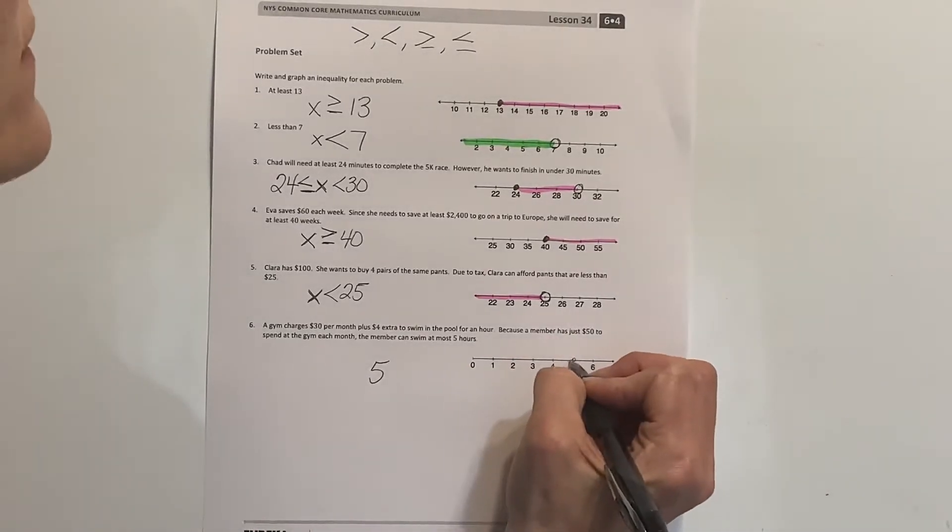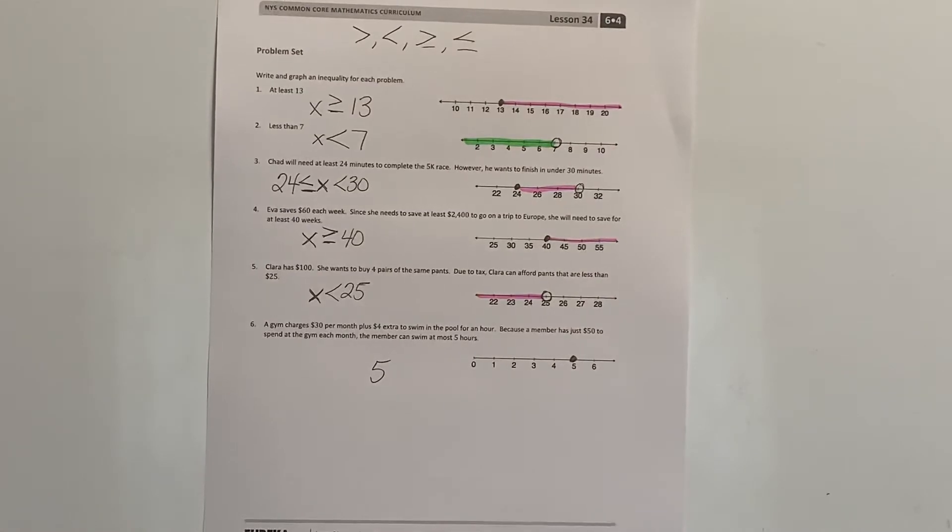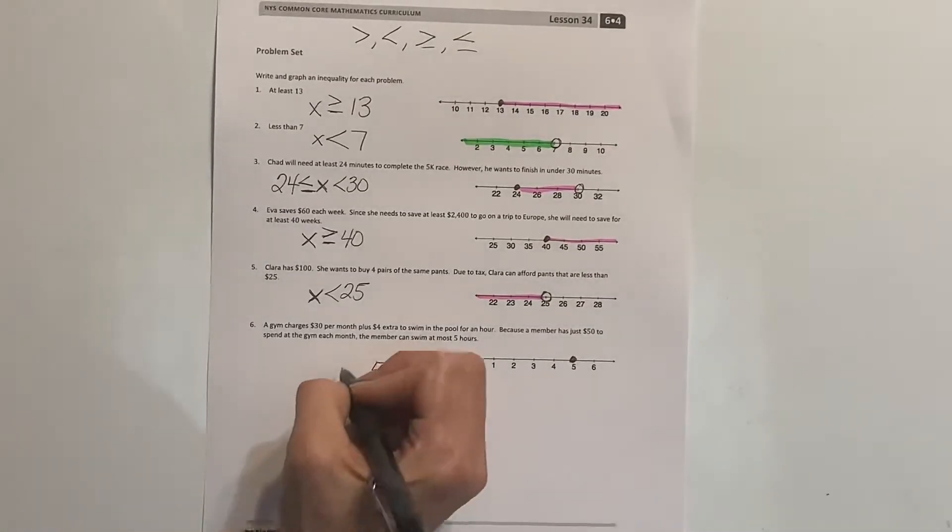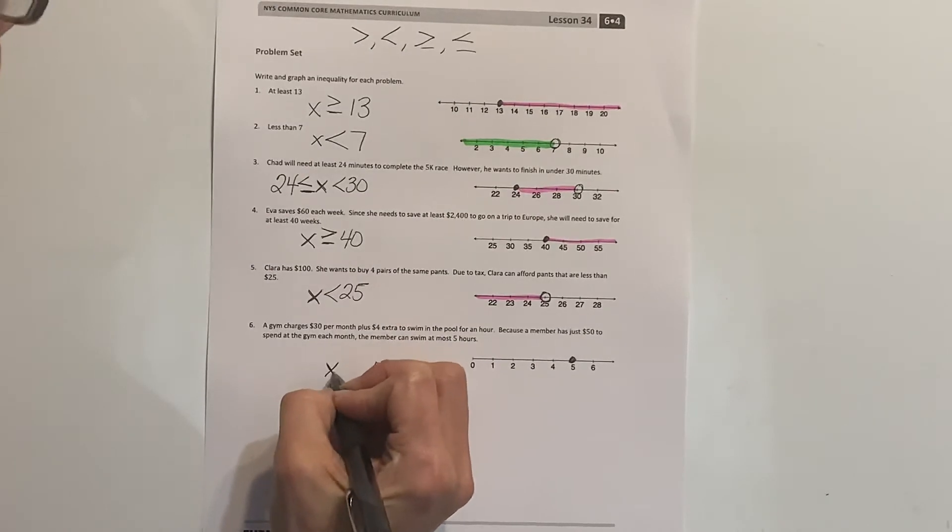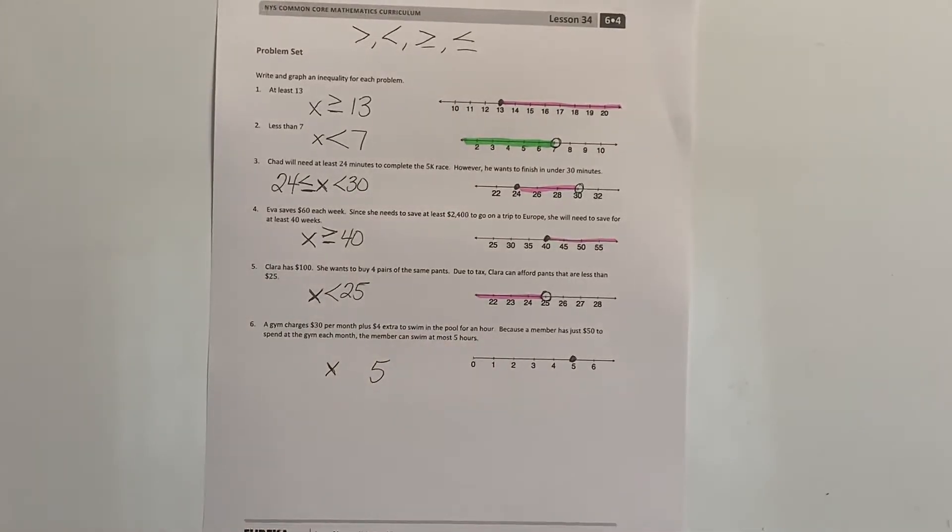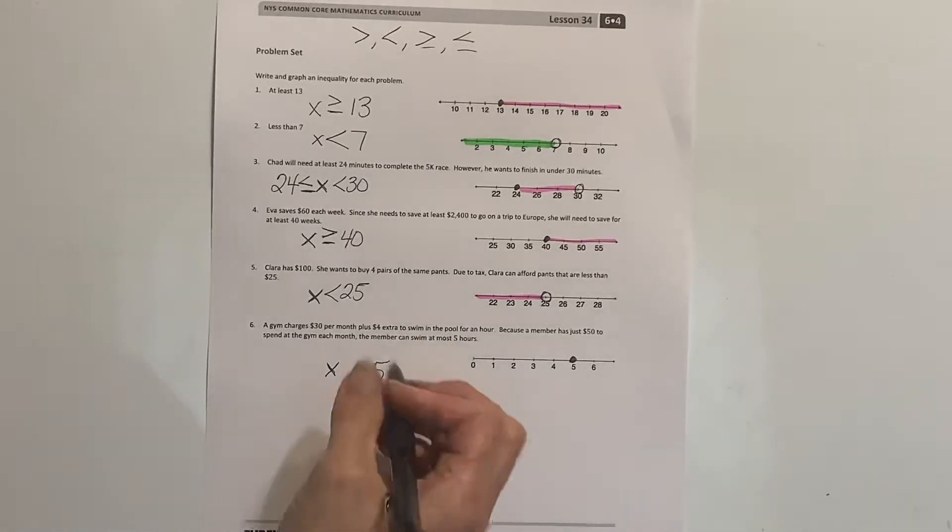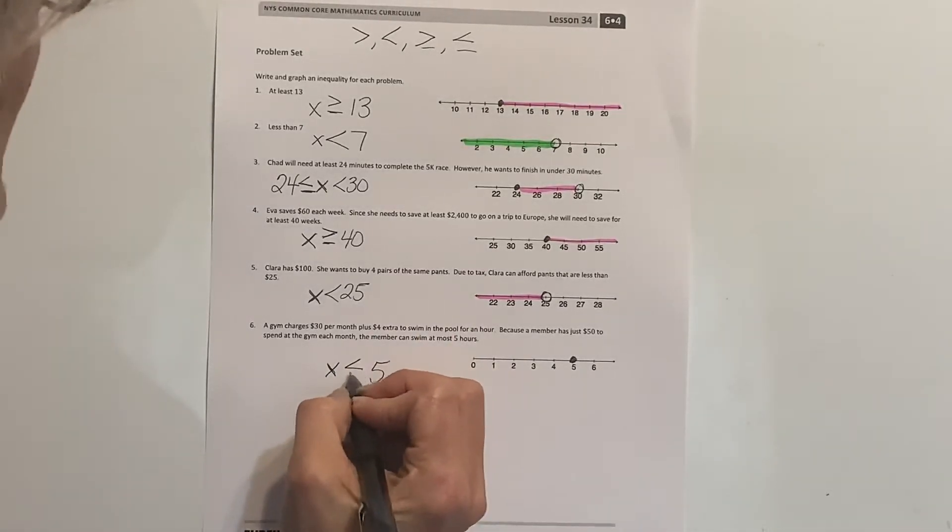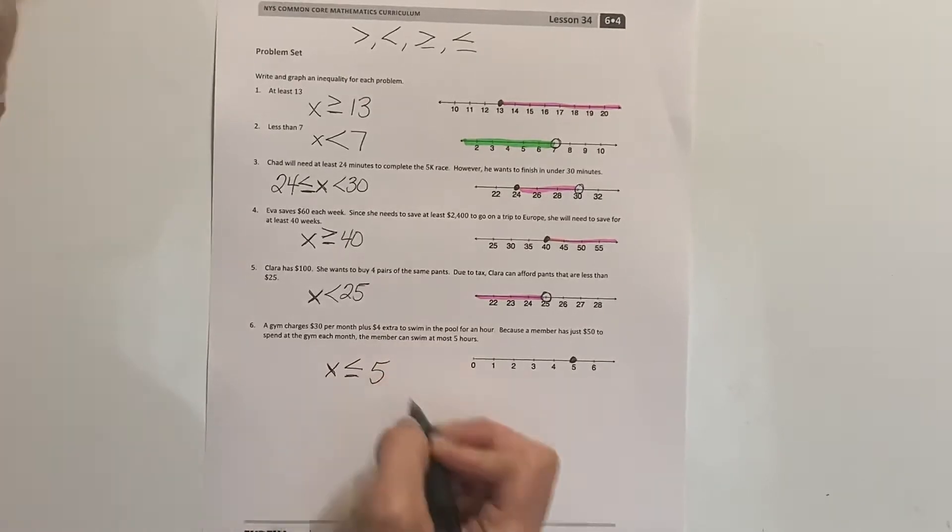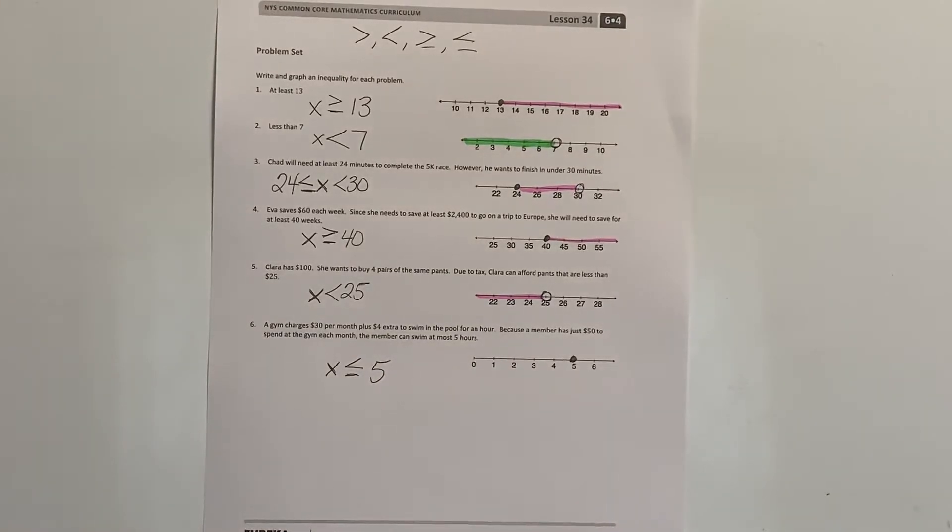So can they swim for five hours? The member can swim at most five hours, so five hours is at most what they can swim. So does it include the five hours? Yes, it does. So now if we know five hours, we know that the unknown, how much time they spend, can be either less than or equal to five hours.